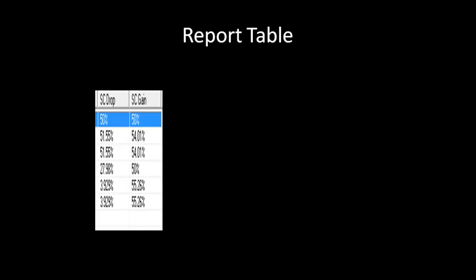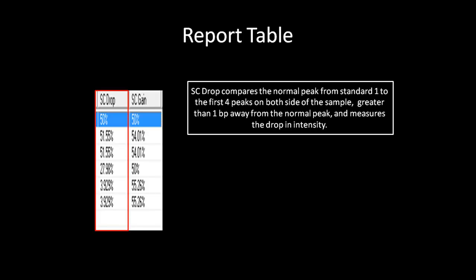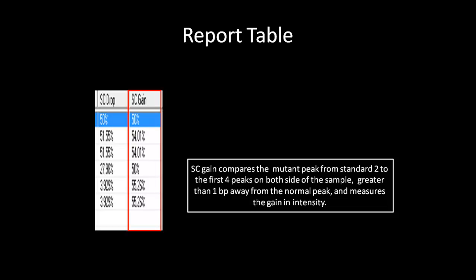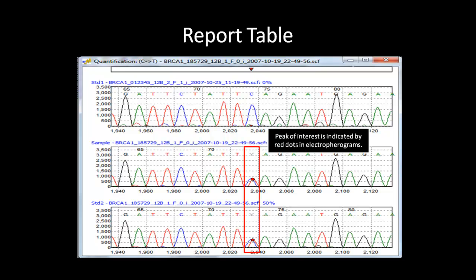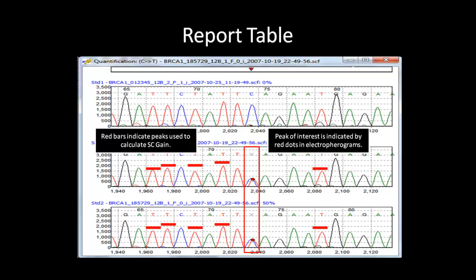The SE drop and SE gain stand for single color drop and single color gain. The SE drop measures the drop in peak intensity by comparing the normal peak from standard 1 to the first 4 peaks on both sides of the sample greater than 1 base pair away from the normal peak of the same wavelength. The SE gain is calculated the same way as the SE drop, except it uses standard 2 to measure the mutant peak gain in intensity. You can double-click on any of the variants to bring up the electropherogram of the position of interest. The position of interest is indicated by a red dot on top of the mutation peak. The peaks with the red bar indicate the mutant peaks used to calculate the SE gain. You can therefore review all your quantified substitutions with ease.